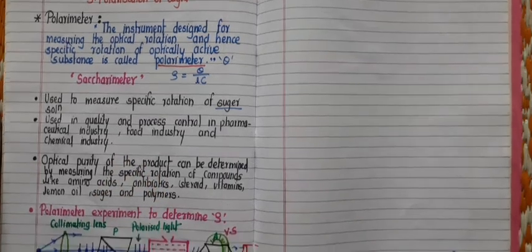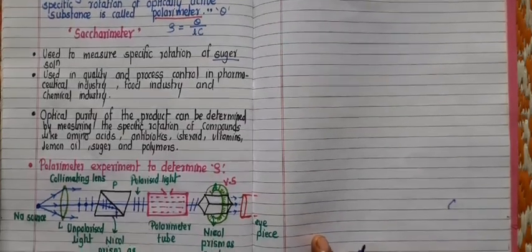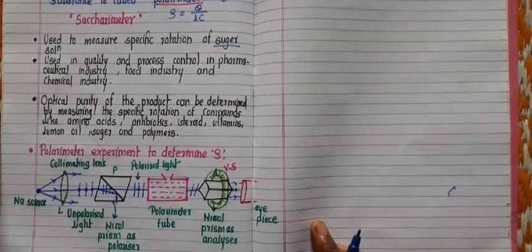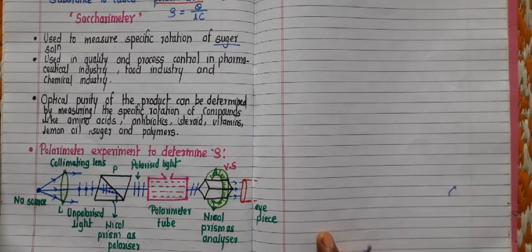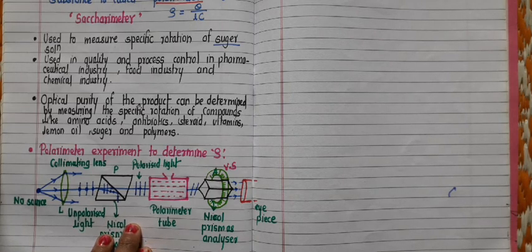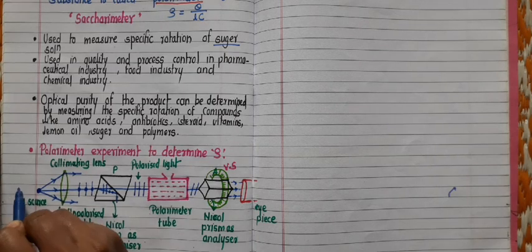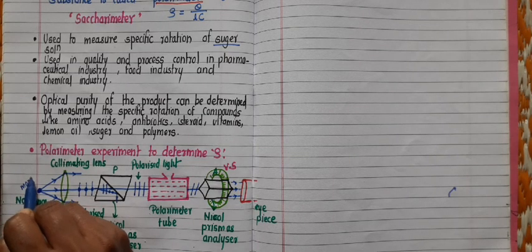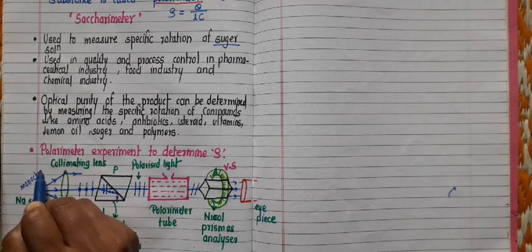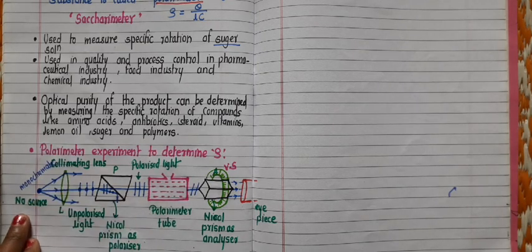Now, the polarimeter experiment to determine specific rotation: how can we measure specific rotation using this polarimeter? In this experiment, we consider a source of light — a monochromatic source. Most of the time in the laboratory, we use a sodium source as the monochromatic source of light, and that light is unpolarized.